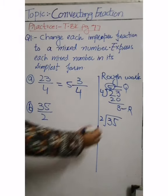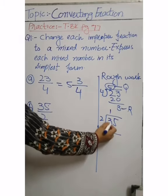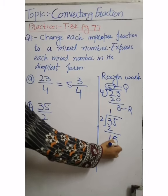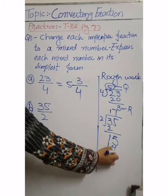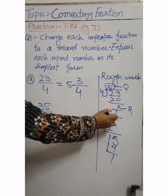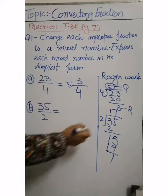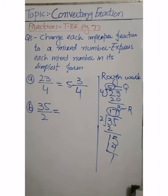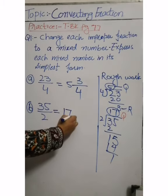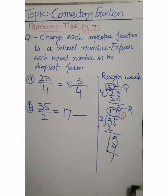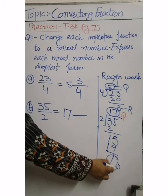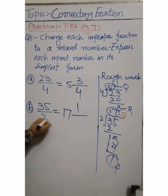Part b: 35 by 2. We put 35 inside and divide it by 2. 2 goes 17 times: 2 into 3 once giving 2, remainder 1; bring down 5 to get 15; 2 into 15 gives 7 times 14, remainder 1. The quotient 17 becomes the whole number, the remainder 1 becomes the numerator, and the denominator remains the same. So the answer is 17 whole 1 by 2.